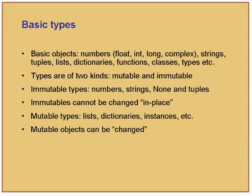The types are classified further into two: they are called mutable types and immutable types. Immutable types are like numbers, strings, the special type called None, and tuples. Immutables cannot be changed in place. Think of the number 1 - you cannot change 1; 1 is 1. On the other hand, think of something like a list. I can add something to a list, I can remove elements from a list, so I can actually change the object fundamentally.